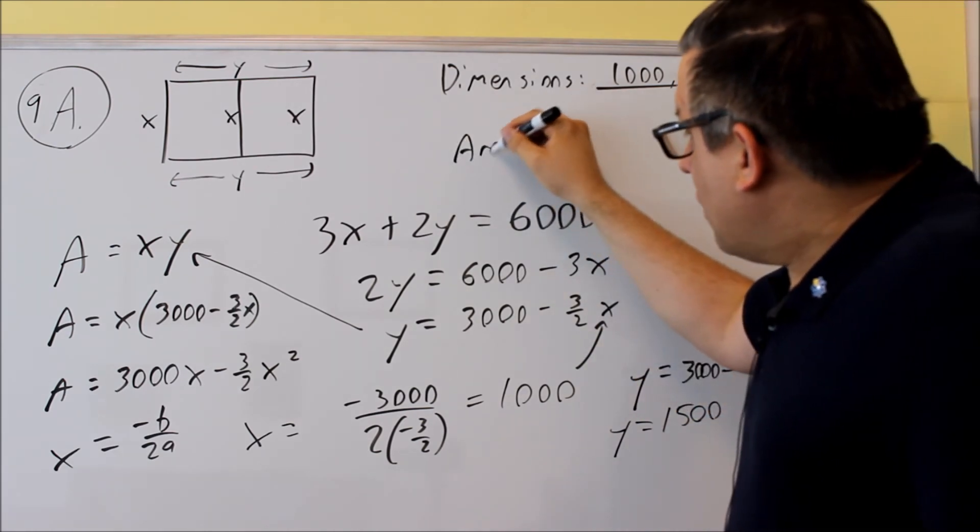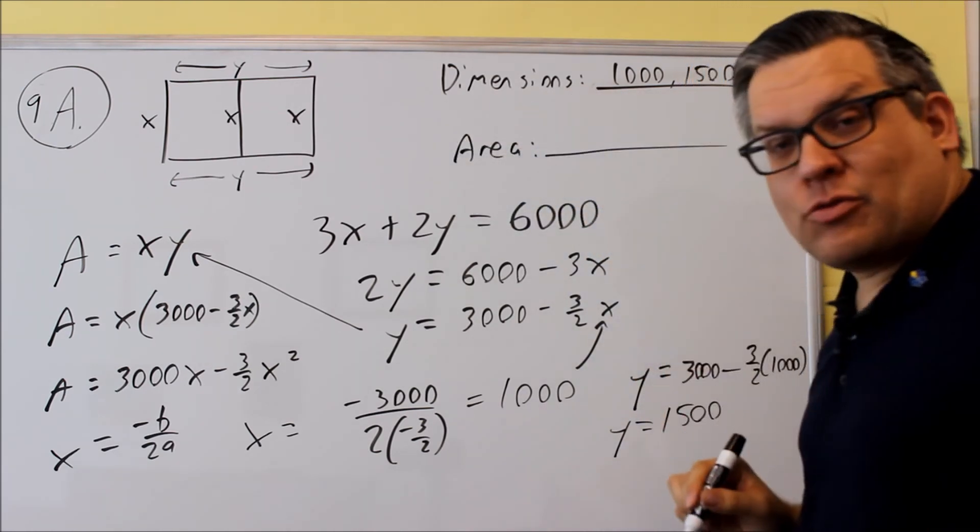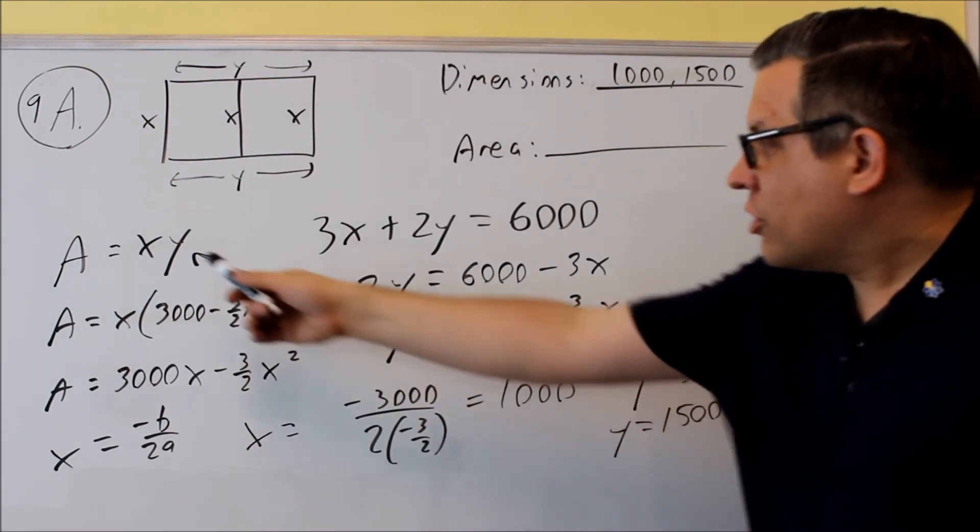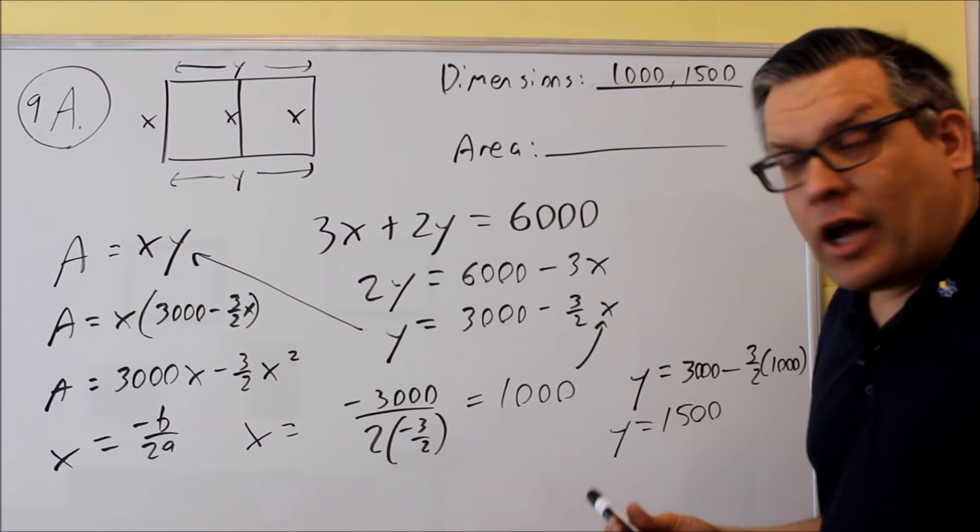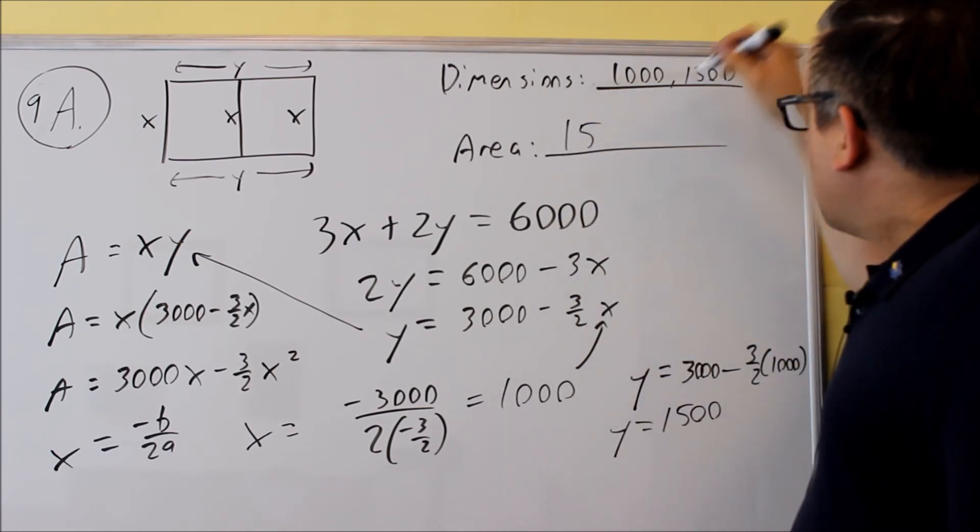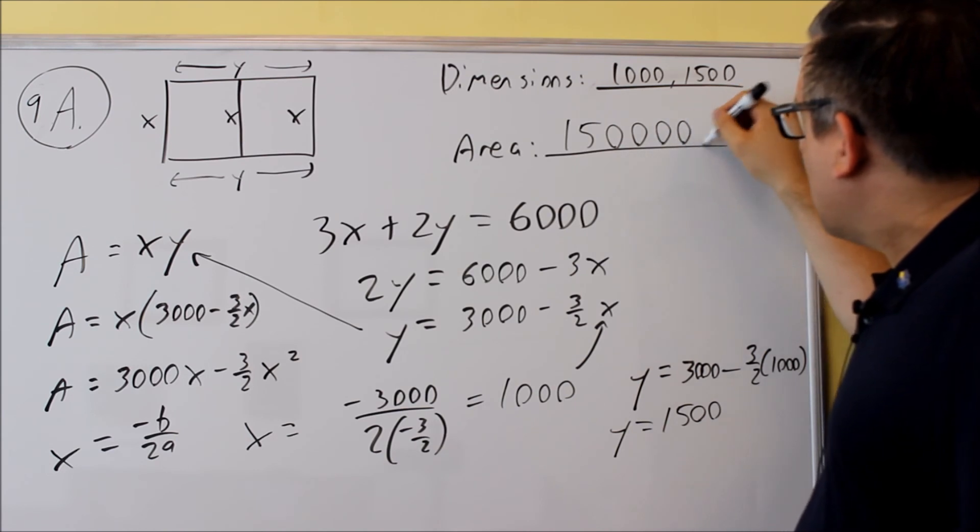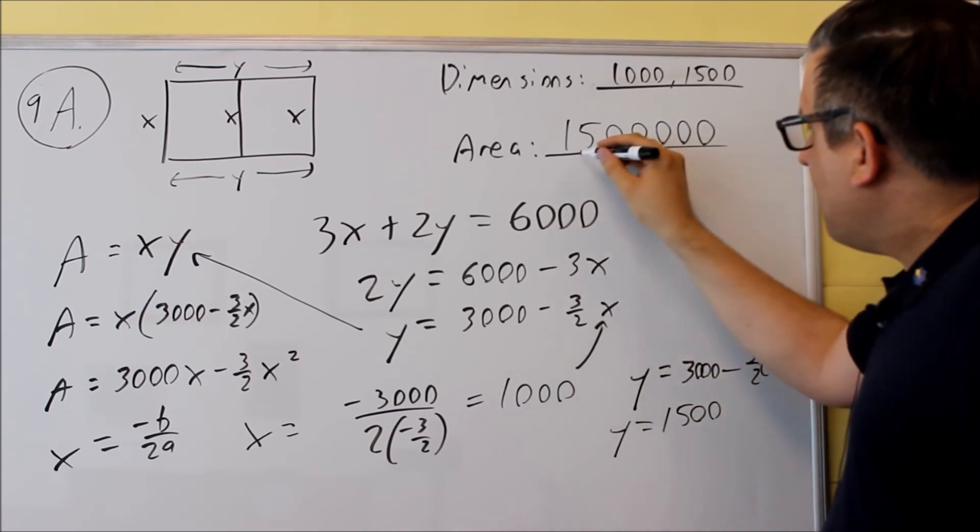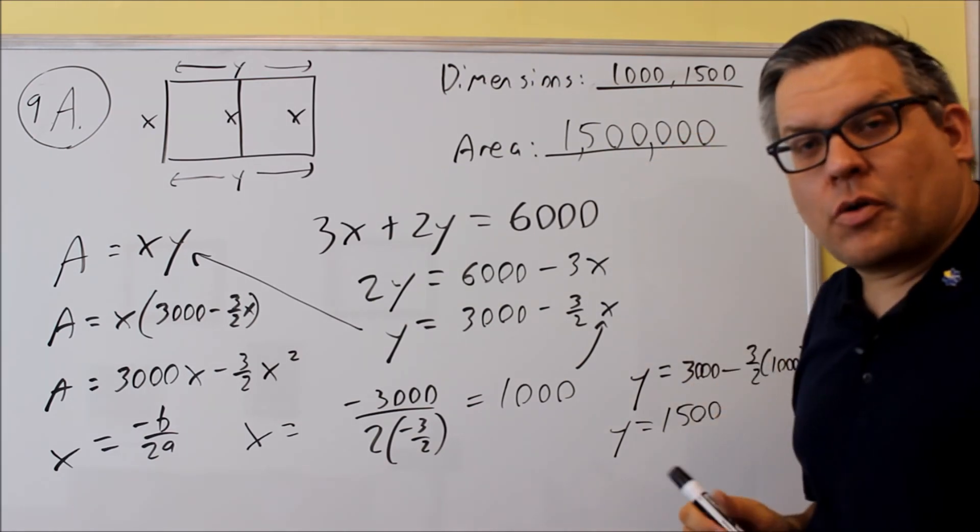Now the other one asks you for the maximum area. All you're going to do is multiply these two numbers together because originally we had area equals x times y. So if I multiply those together I get a 15 with five zeros after it. So this right here will be my maximum enclosed area.